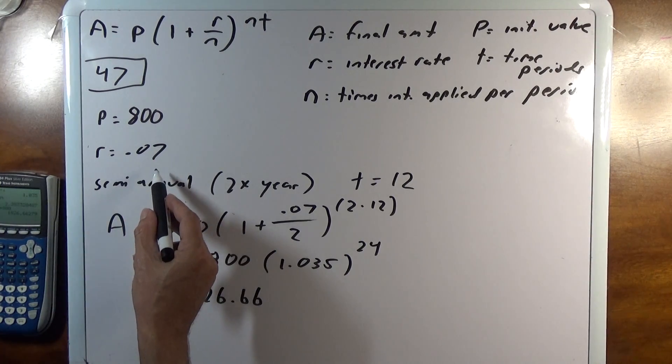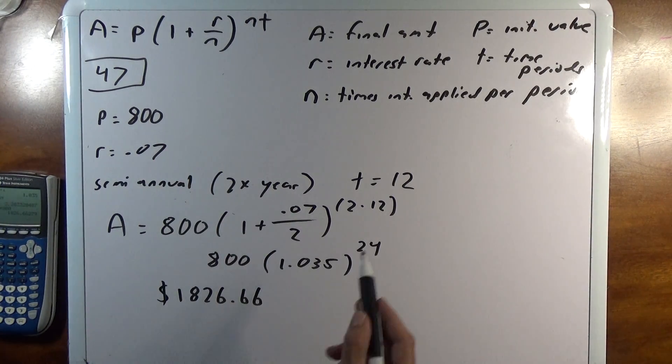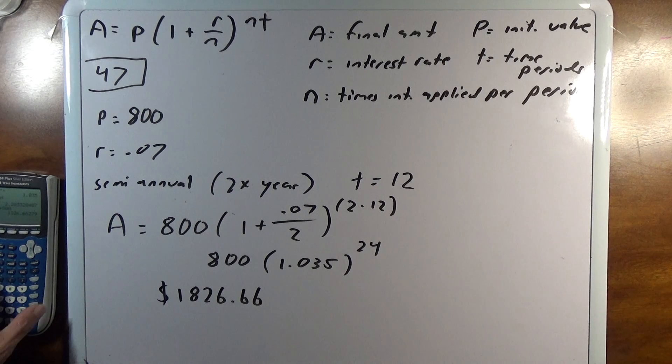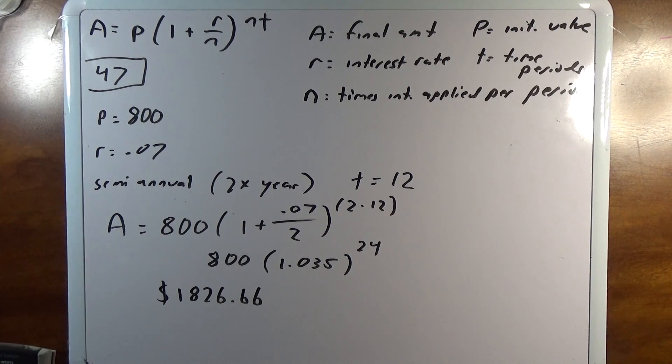7% is a solid interest rate and it's over 12 years, so it's compounding 24 times. So I'll just punch it in one more time. 800 times 1 plus 7 over 2 to the power of 24. Yeah, getting the same thing.